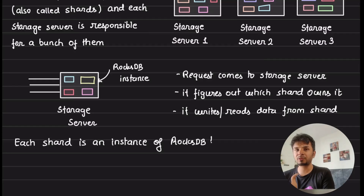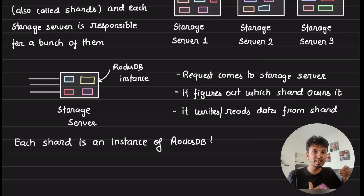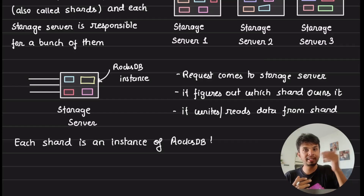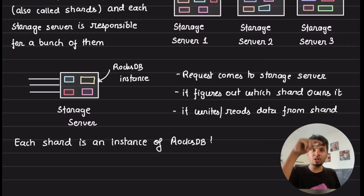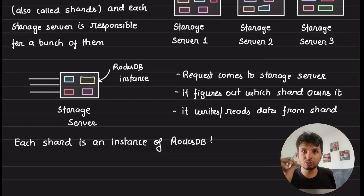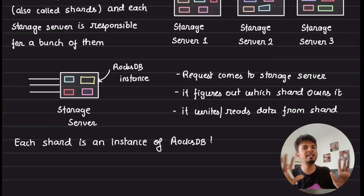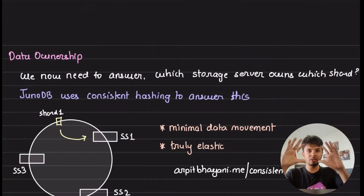The overall responsibility of a storage server is pretty simple. It listens on a TCP port on which any internal component can connect and ask it to create, put, delete, or get a key. A request comes to the storage server over TCP, and the storage server figures out which shard it belongs to. It goes to that corresponding local RocksDB instance, figures out which shard owns the key, and reads or writes the data from that corresponding shard.